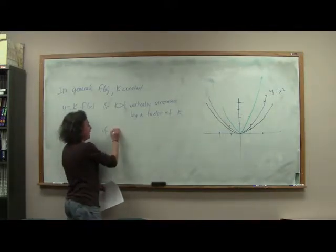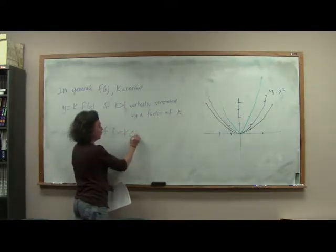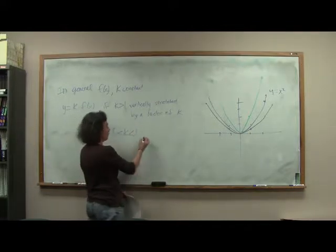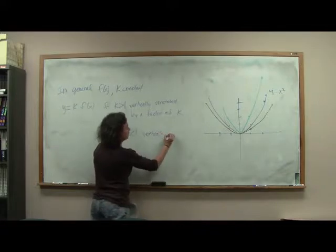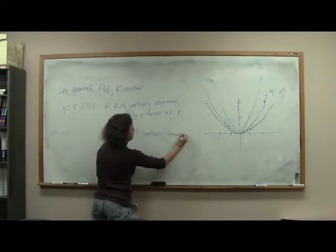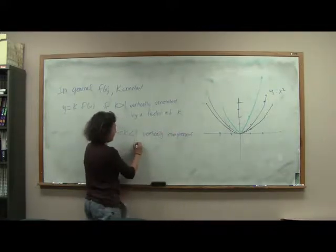And if k is between 0 and 1, like our 1 half example, then our graph will be vertically compressed by a factor of k.